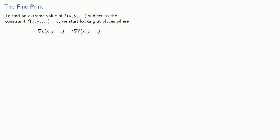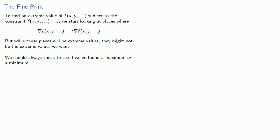To find an extreme value of some objective function subject to a constraint function, we can start looking at places where the gradient of our objective function is lambda times the gradient of our constraint function. But while these places will be extreme values, they might not be the extreme values we want, and it's important we should always check to see if we've found a maximum or a minimum. Let's take a look at some examples.